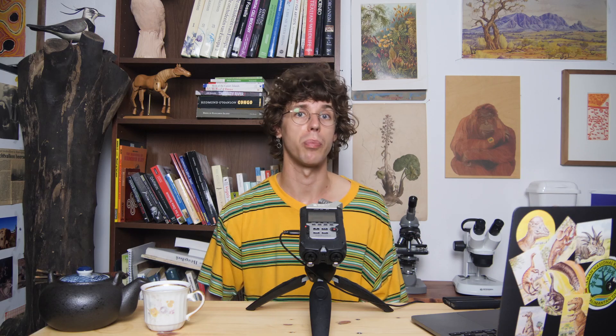Now that I have discussed Cooksonia and the early land plants of the Rhynie Chert, I want to discuss a shift in the reproductive system of these plants that might have occurred with the emergence of vascular plants. In the previous video I explained that in the early land plants and the bryophytes, the gametophyte — the life stage with a single set of chromosomes — was dominant. However, with the evolution of vascular plants this changed, and the sporophyte, which possesses two sets of chromosomes, became the dominant life stage.